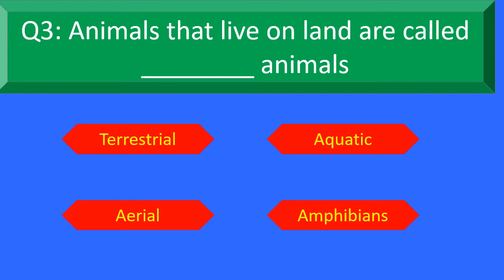Animals that live on land are called dash animals — Option A: Terrestrial, Option B: Aquatic, Option C: Aerial, and Option D: Amphibians.